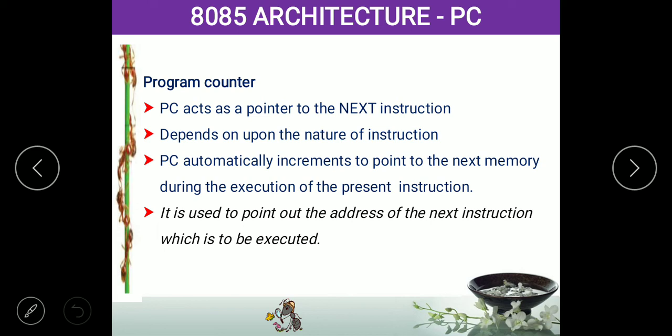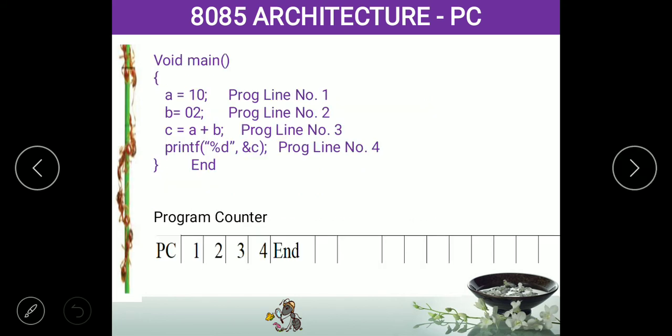The program counter is a 16-bit memory element. For a C program example: void main, A is equal to 10, B is equal to 2, C is equal to A plus B, printf C.